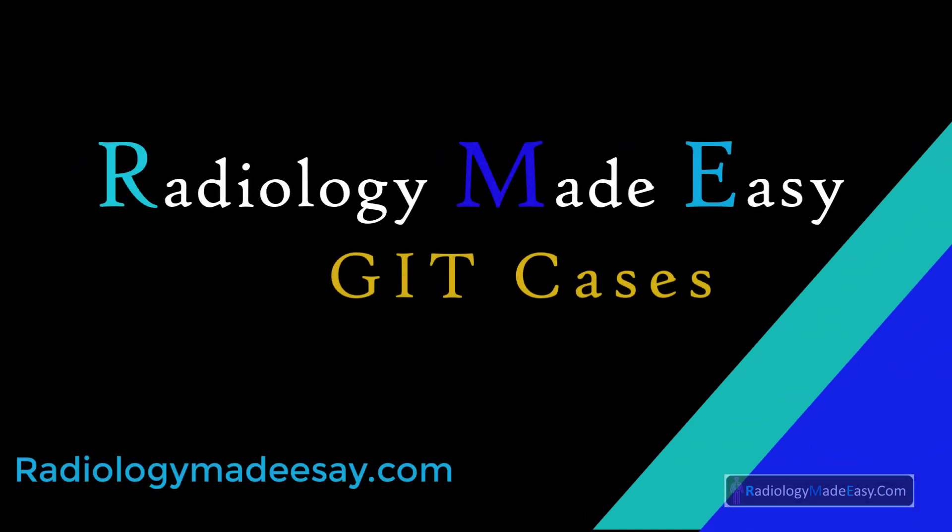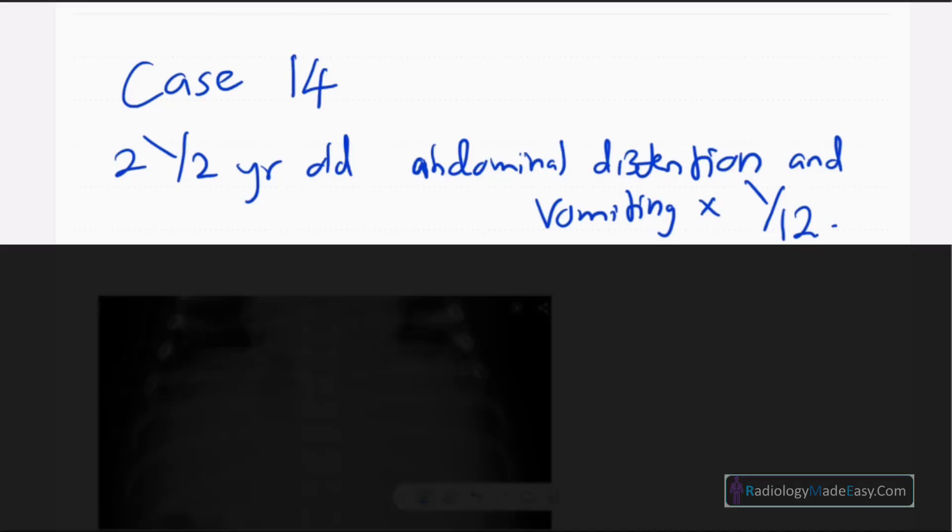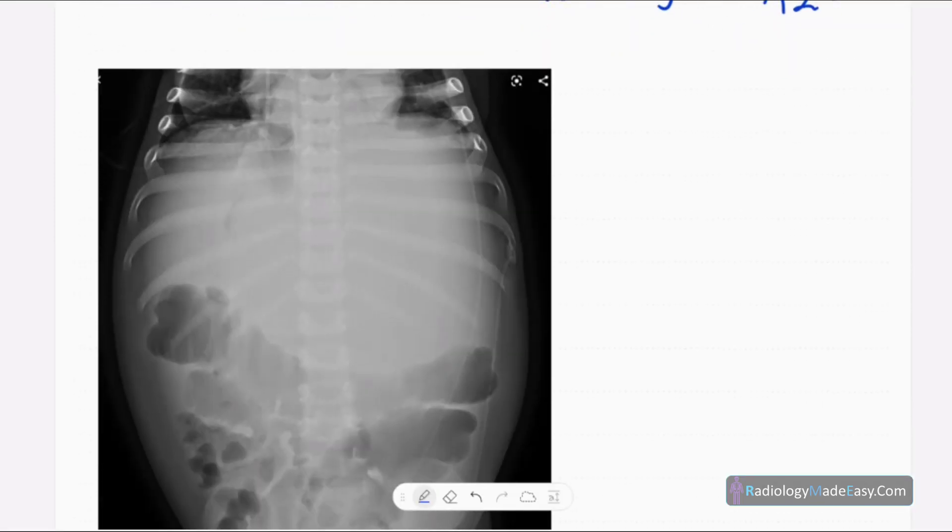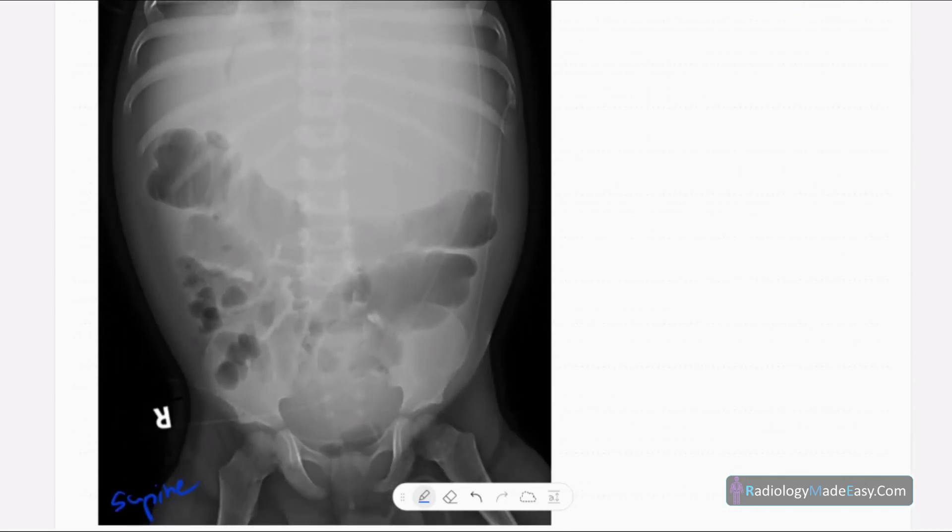Hello everyone, welcome back to Radiology Made Easy, your all-time favorite YouTube channel. Let's see today's case. This is case number 14 in abdominal radiology. Today our patient is a two and a half year old patient presented with abdominal distension and vomiting for one month duration. He has progressively increased in symptoms.